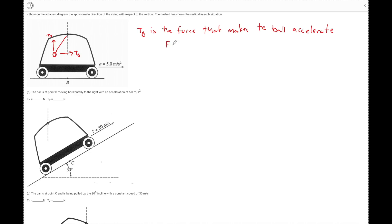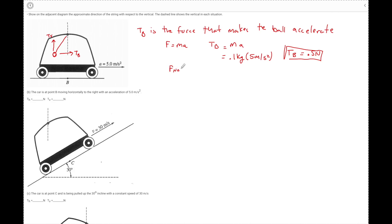TB is the force that makes the ball accelerate, so by Newton's second law TB equals MA. The mass is 0.1 kilograms and acceleration is 5 meters per second squared, so TB equals 0.5 newtons. The ball isn't accelerating vertically, so F_net in the vertical direction equals zero. That means the vertical component of tension equals the weight: TV equals 1 newton. One point for the diagram, one for TB, one for TV.